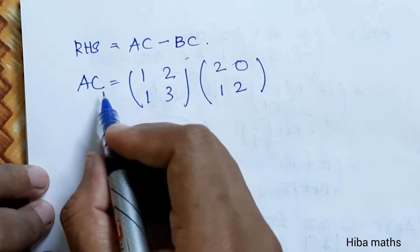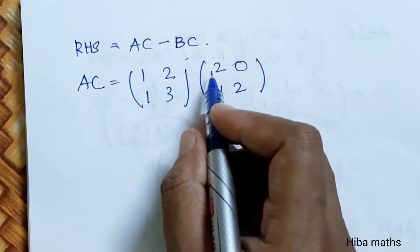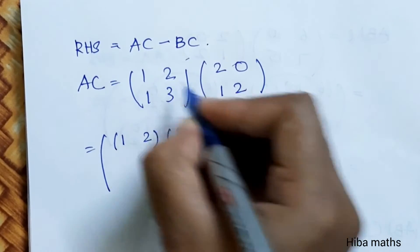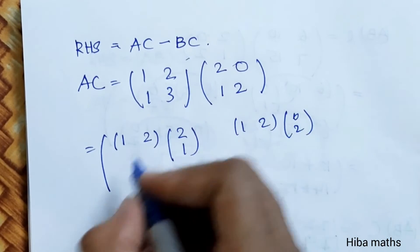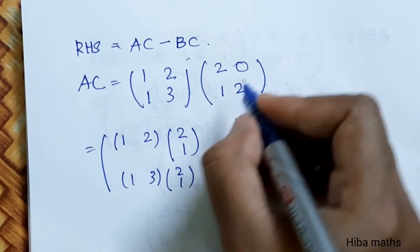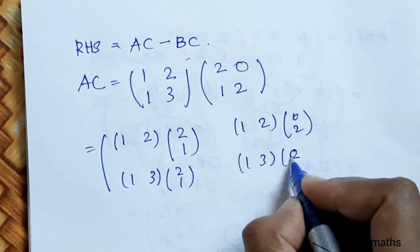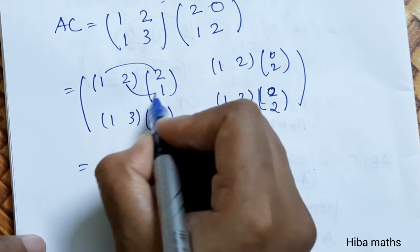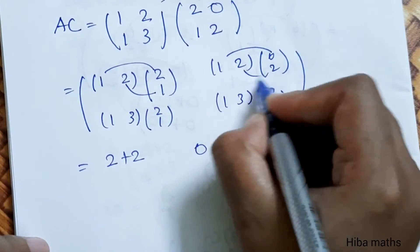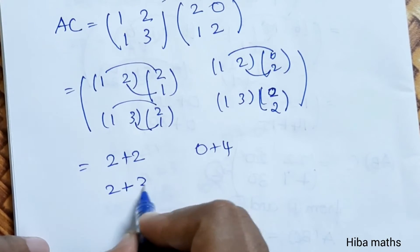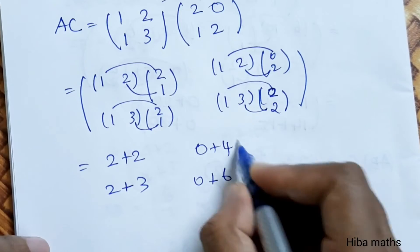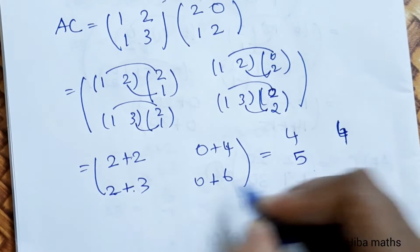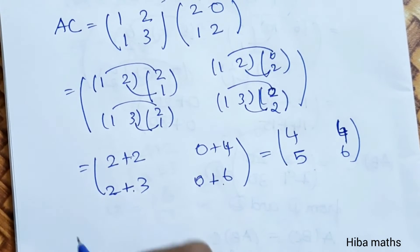For RHS, compute AC minus BC. AC: A = [1,2; 1,3] and C = [2,0; 1,2]. First row first column: 1×2 + 2×1 = 4; first row second column: 1×0 + 2×2 = 4; second row first column: 1×2 + 3×1 = 5; second row second column: 1×0 + 3×2 = 6. So AC = [4,4; 5,6].